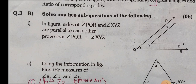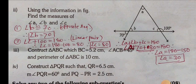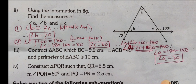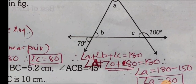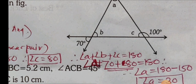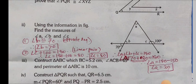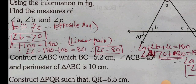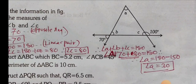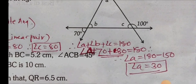Question 3, solve sub-questions: Using the information in the given figure, find the measure of angles A, B, and C. Angle B is a vertically opposite angle to 70 degrees, so angle B equals 70. Angle C plus 100 equals 180 (linear pair), so angle C equals 80. In triangle ABC, A plus B plus C equals 180, so angle A equals 180 minus 150 equals 30.